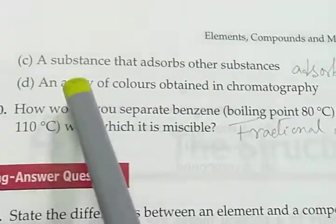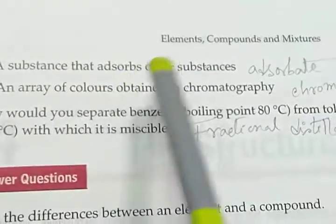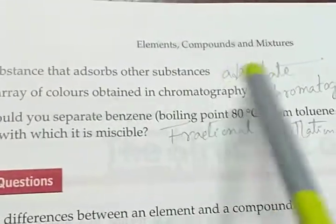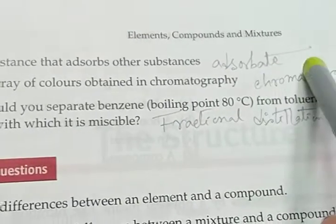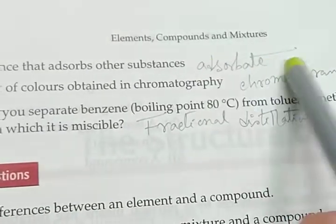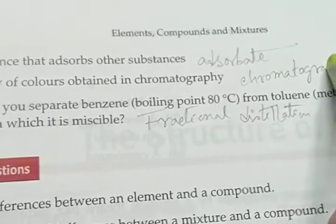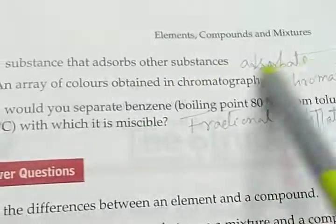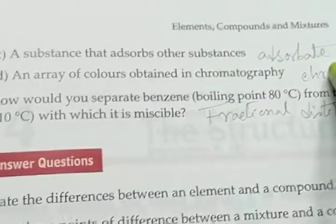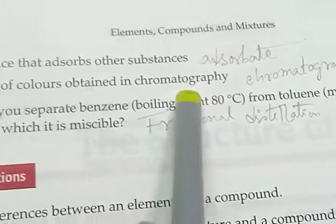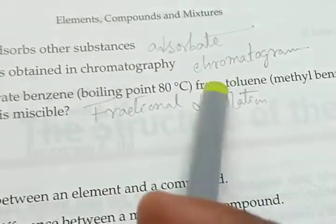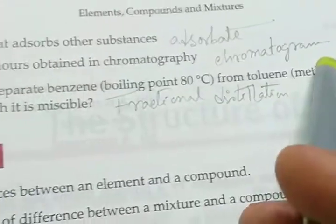A substance that adsorbs other substances is called an adsorbent, and the substance adsorbed onto its surface is the adsorbate. The area of colors obtained in chromatography is known as a chromatogram.